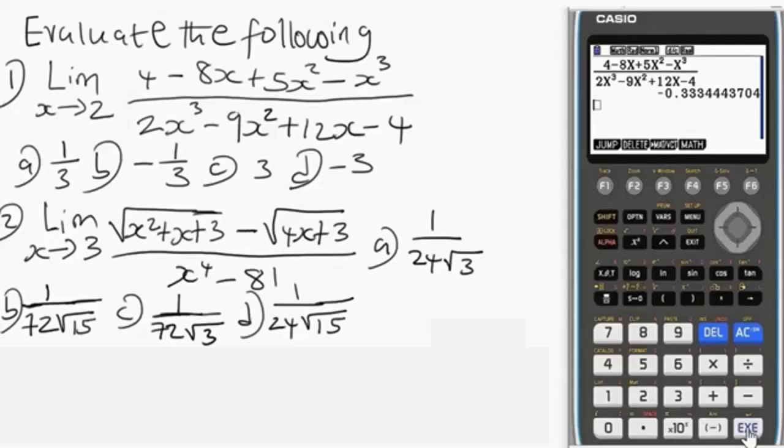Minus 0.33, and minus 0.33 is the same thing as minus 1/3. Let's verify it. So we delete everything, F1. We check minus 1/3. To change this to decimal we press S↔D, so you can see minus 0.33. So the answer is option B. That's simple.